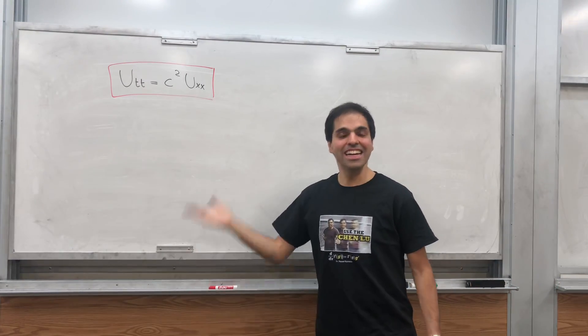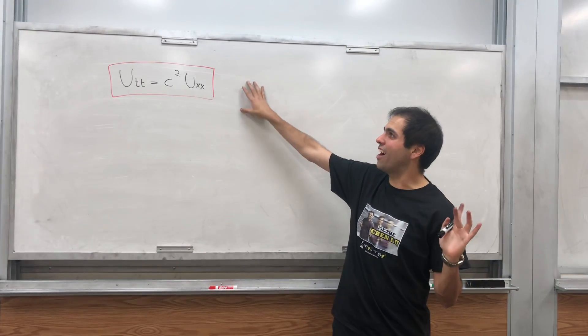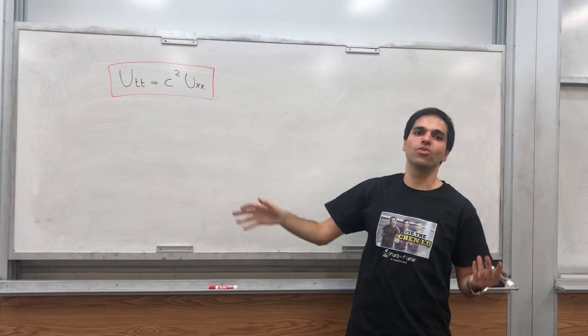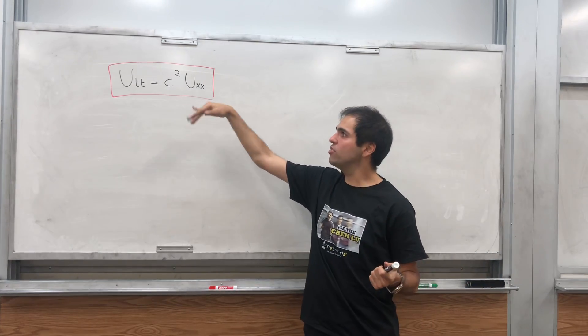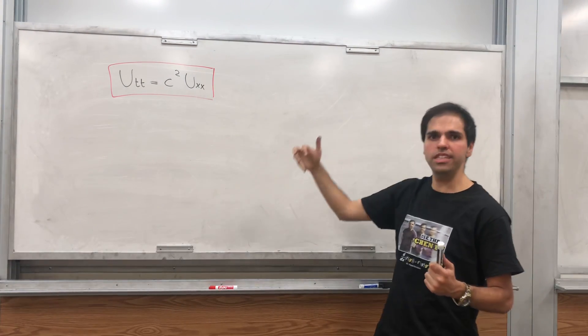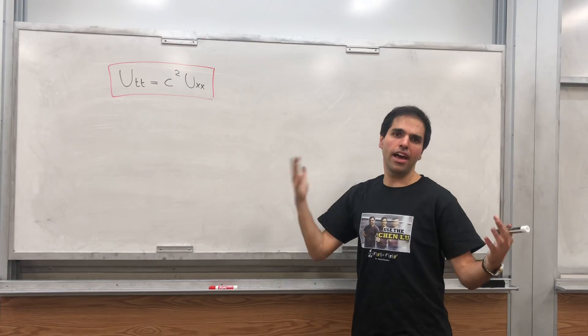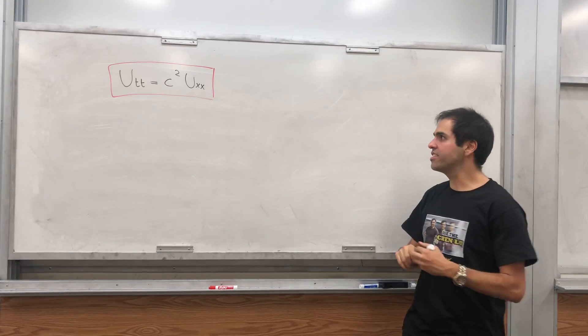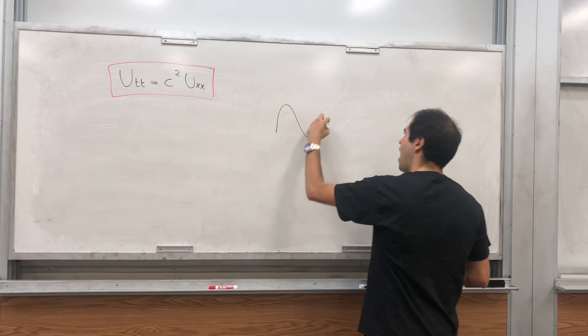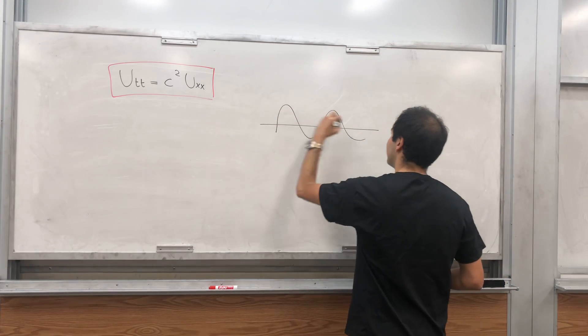All right, thanks for watching. Today's goal is to find a general solution of the wave equation u_tt equals c squared u_xx, and what this represents is the height of a wave at position x and time t.